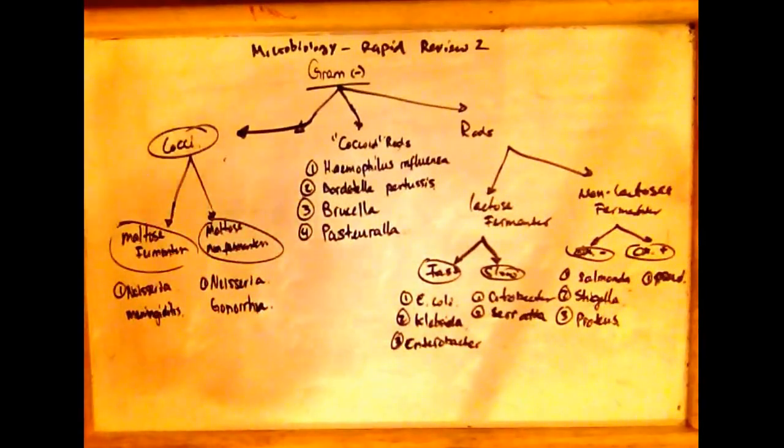So microbiology, rapid review tube. Look at gram-negative now. Gram-negative organisms can be characterized into either cocci, cocci rod, or rods.